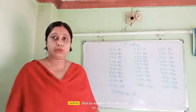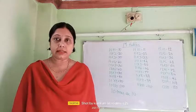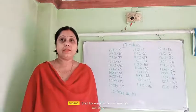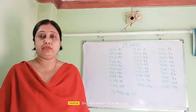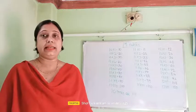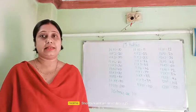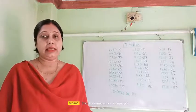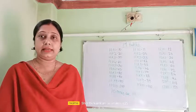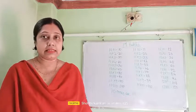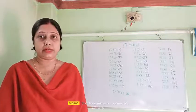10 twos are 20. 10 threes are 30. 10 fours are 40. 10 fives are 50. 10 sixes are 60. 10 sevens are 70. 10 eights are 80. 10 nines are 90. 10 tens are 100.